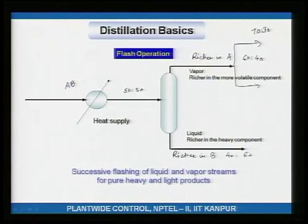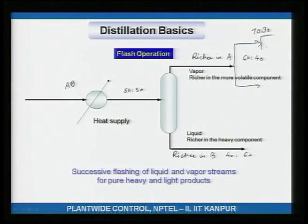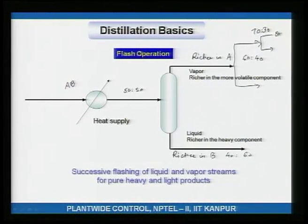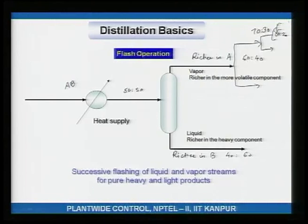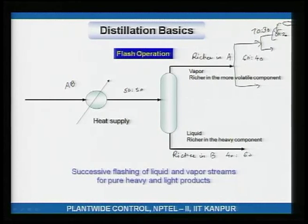We can repeat this: take the vapor, liquefy it, partially vaporize it again, and perhaps get 80-20. Continuing this process, we will eventually get something nearly pure A — the light component — at the top.